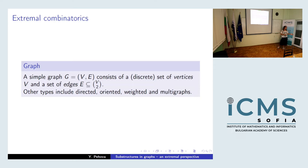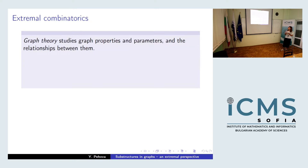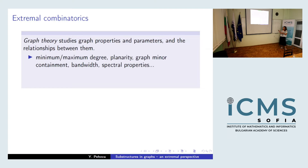Graph theory studies properties and parameters of graphs and the relationships between them. Examples include minimum and maximum degree of a graph, planarity of graphs, graph minors, bandwidth, and spectral properties of the adjacency matrix of the graph, which goes toward algebraic graph theory.